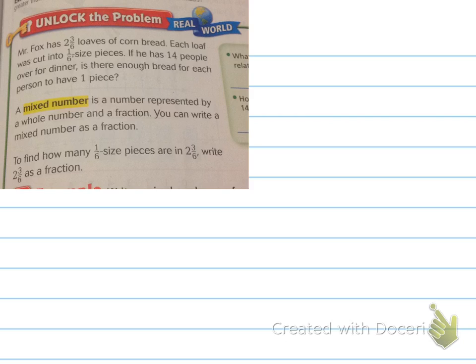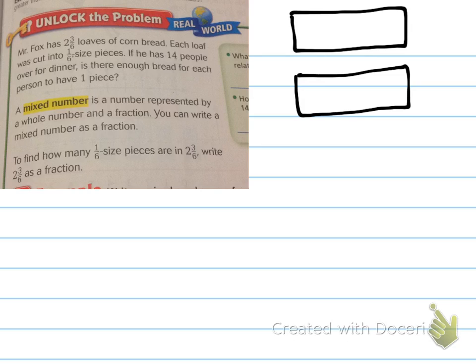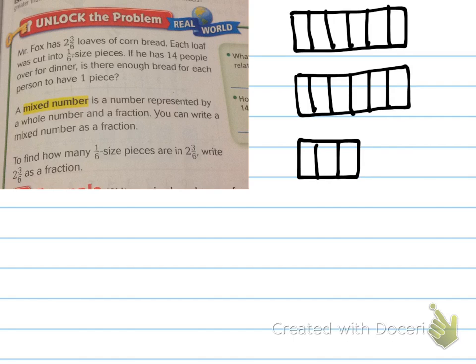Now, I'm going to model the problem with a picture, and then I'm going to show you how we learned, right, with multiplying the denominator, the whole number, and adding the numerator. So, two and three-sixths loaves. Well, two, right, here's two whole loaves, and it says each loaf was cut into six pieces. There's six pieces. There's six pieces. So, those are two whole loaves, and three-sixths.